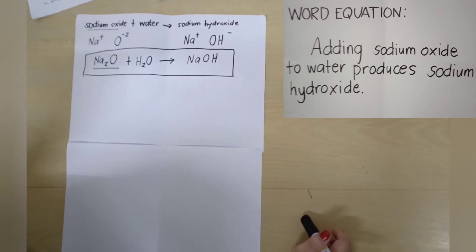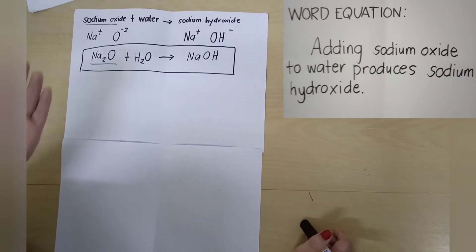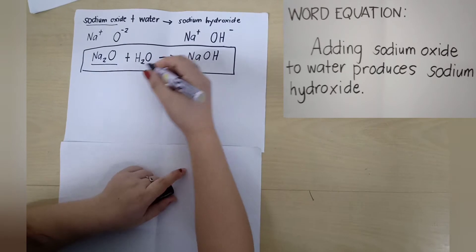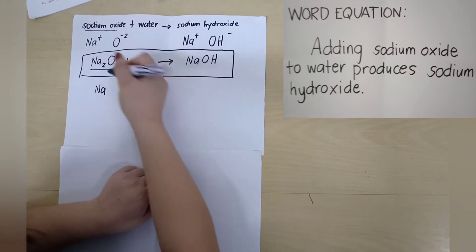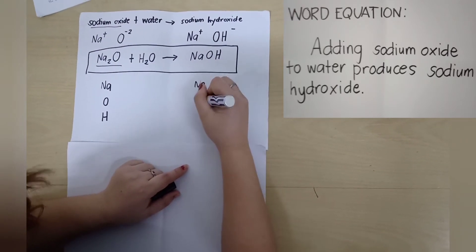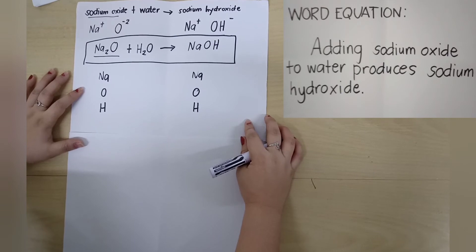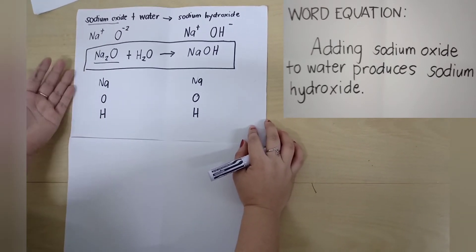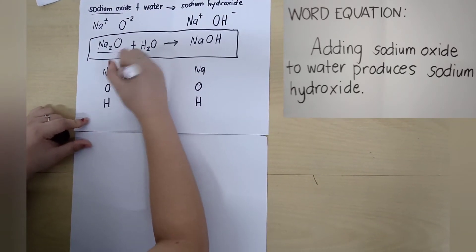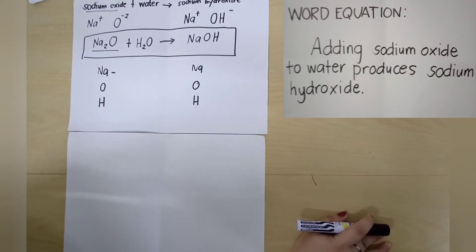Now let's try to balance this chemical equation. In balancing, we have to follow the steps shown earlier. First step: identify the elements found in the compounds on the reactant and the product side. On the reactant side, we have Na, O, and H. Also, we have Na, O, and H for the product in NaOH. Next step is to count the number of atoms of each element. We count the number of atoms by simply looking at their subscript.